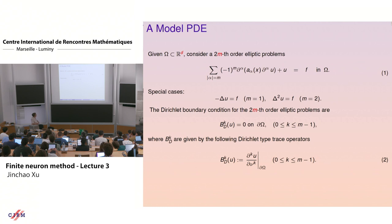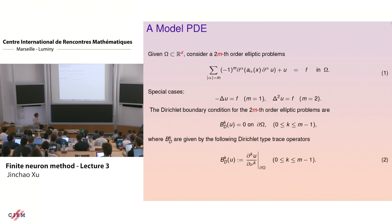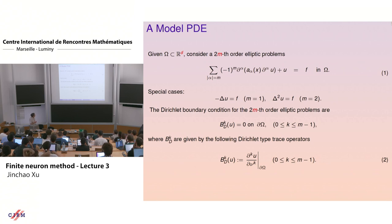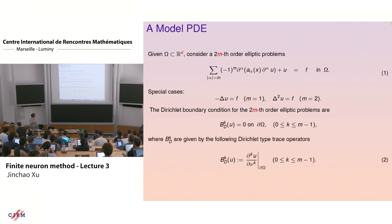Special cases include the Poisson equation and the biharmonic equation. For boundary value problems, the Dirichlet boundary condition is just the trace, and you can talk about different boundary conditions — for example this Dirichlet condition, and you get all normal derivatives up to order n minus one.